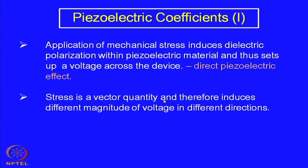With these qualitative descriptions, let us try to understand the different coefficients and their mathematical representation — how one can relate the different parameters mathematically. Application of mechanical stress induces dielectric polarization within the piezoelectric material and thus sets up a voltage across the device, which we have already seen and discussed. That is called the direct piezoelectric effect. Stress is a vector quantity and therefore induces different magnitudes of voltage in different directions.